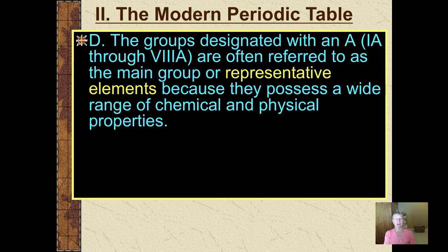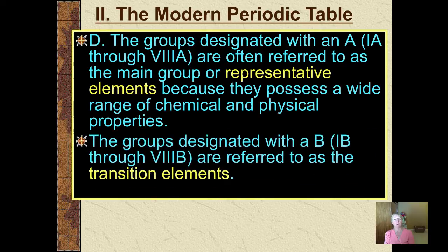The groups that are designated with an A, Roman numeral 1A through 8A, are often called the main group or representative elements. They do possess a wide range of chemical and physical properties. But as we will learn, the periodicity that we are going to understand, the regularly repeating patterns, are more perfectly revealed when you consider just these eight columns alone.